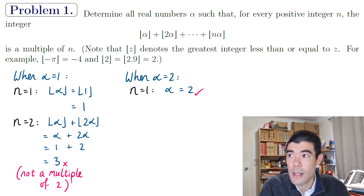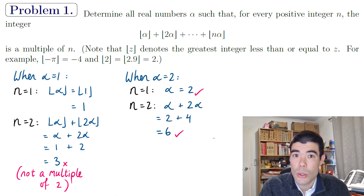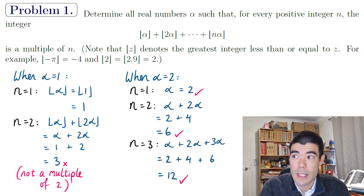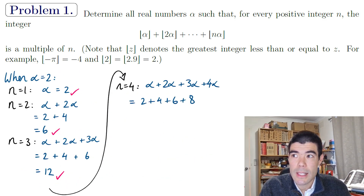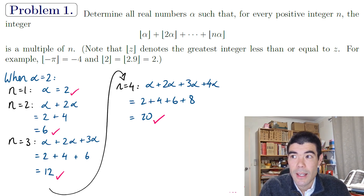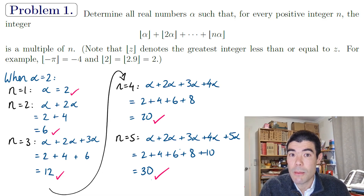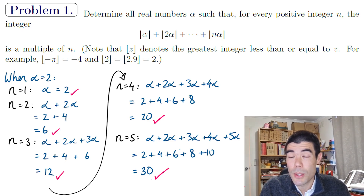Let's try alpha = 2. For n = 1 we get 2; for n = 2 we get 2 + 4 = 6, which is a multiple of 2; for n = 3 we get 2 + 4 + 6 = 12, a multiple of 3; for n = 4 we get 20; and for n = 5 we get 30, a multiple of 5. It's looking like when alpha = 2 the sum is always a multiple of n, and in fact this works for any even integer.